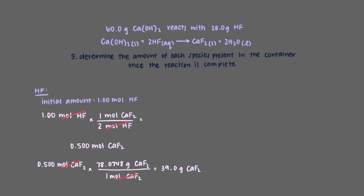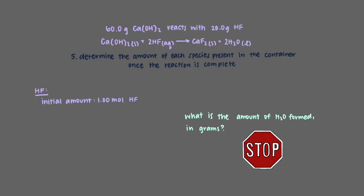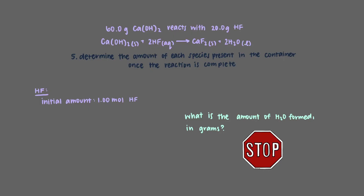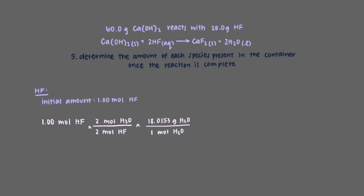We can also figure out the amount of water formed in this reaction. Once again, we'll use the amount of hydrogen fluoride present to determine the amount of water formed. The relationship is: two moles of hydrogen fluoride are needed to produce two moles of water. We use this conversion, then multiply by the molar mass of water — 18.0153 grams per mole — to get that 18.0 grams of water forms from 1 mole of hydrogen fluoride.